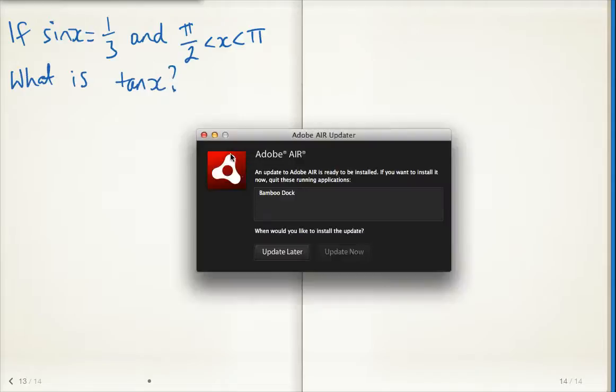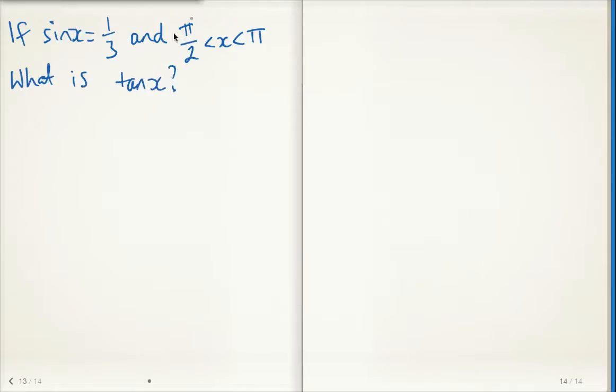Okay, so it tells us what sine x is, gives us the quadrant that x is in, and asks us what is tan x. So really quickly, I might just do a little bit of a sketch to get an idea of what we're talking about here. Pi on 2 and pi, so we're in the third quadrant. So I've got my unit circle. It tells me that sine x is equal to 1 third. Now sine x is the y coordinate, so that's about a third. So we're talking about this angle here.